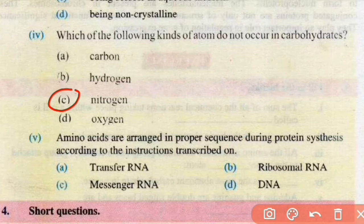Number 5, amino acids are arranged in proper sequence during protein synthesis according to the instructions transcribed on transfer RNA, ribosomal RNA, messenger RNA, or DNA. Right answer is C, messenger RNA.